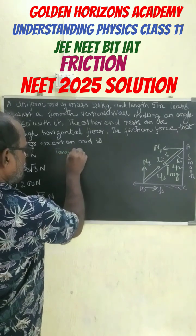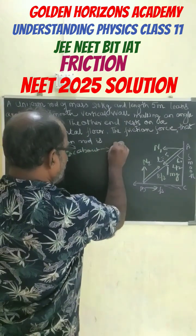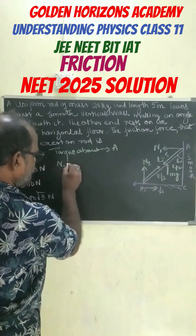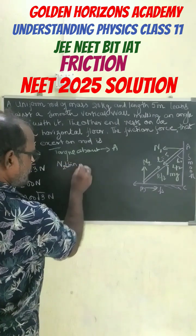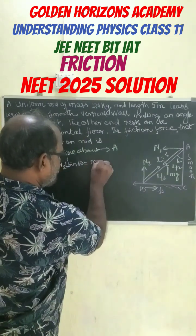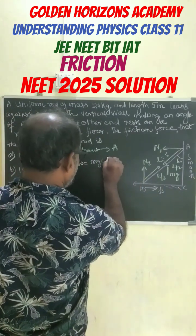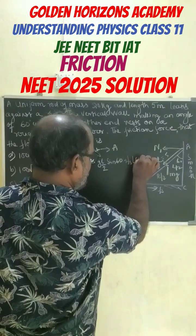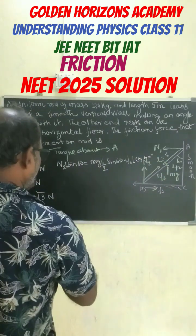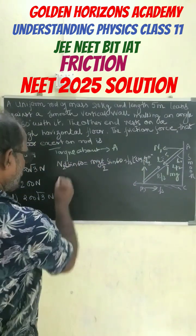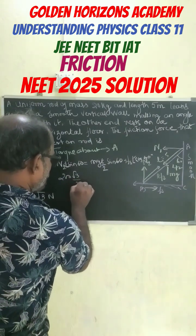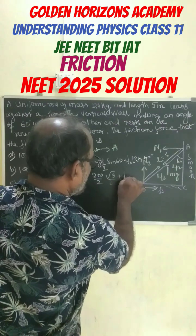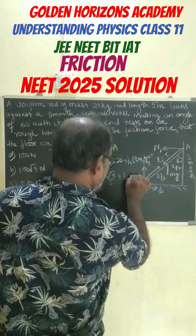Taking torque about A, we have N2 · L sin60° equals mg · L/2 · sin60° plus FS · L · cos60°. From here, L gets cancelled out. Then N2 · (√3/2) equals (200/2) · (√3/2) plus FS · (1/2).